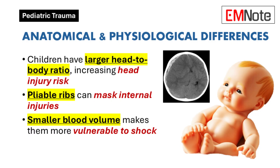Anatomical and Physiological Differences: Children have unique anatomical and physiological characteristics that require specific considerations in trauma management. Their larger head-to-body ratio increases their susceptibility to head injuries, and their pliable ribs mean that significant internal organ injuries can occur without obvious rib fractures. Additionally, their smaller blood volume makes them more susceptible to shock from seemingly minor blood loss.